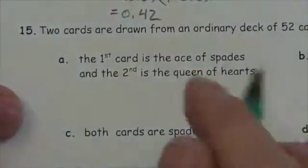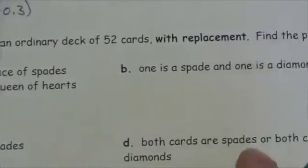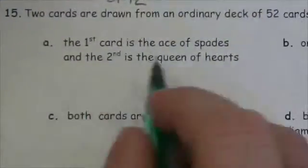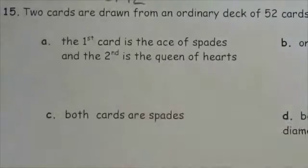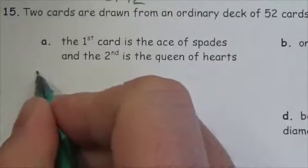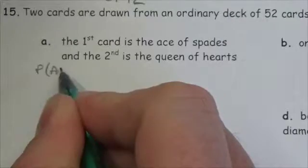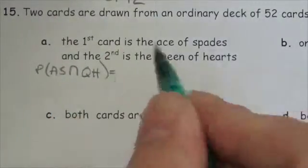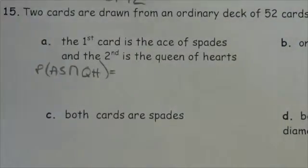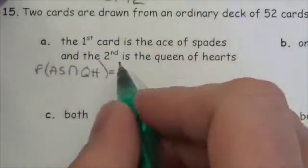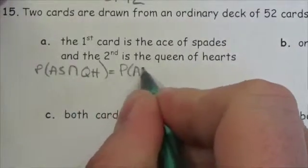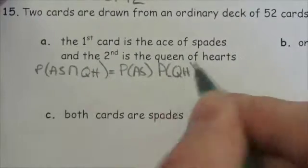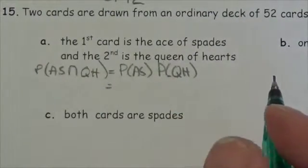Two cards are drawn at random from an ordinary deck of 52 cards with replacement — we are putting the card back. Find the probability that the first card is the ace of spades and the second card is the queen of hearts. Because we are putting the card back, this is with replacement, so these are independent events. This will be the probability of getting the ace of spades multiplied by the probability of getting the queen of hearts — that's what independence means.